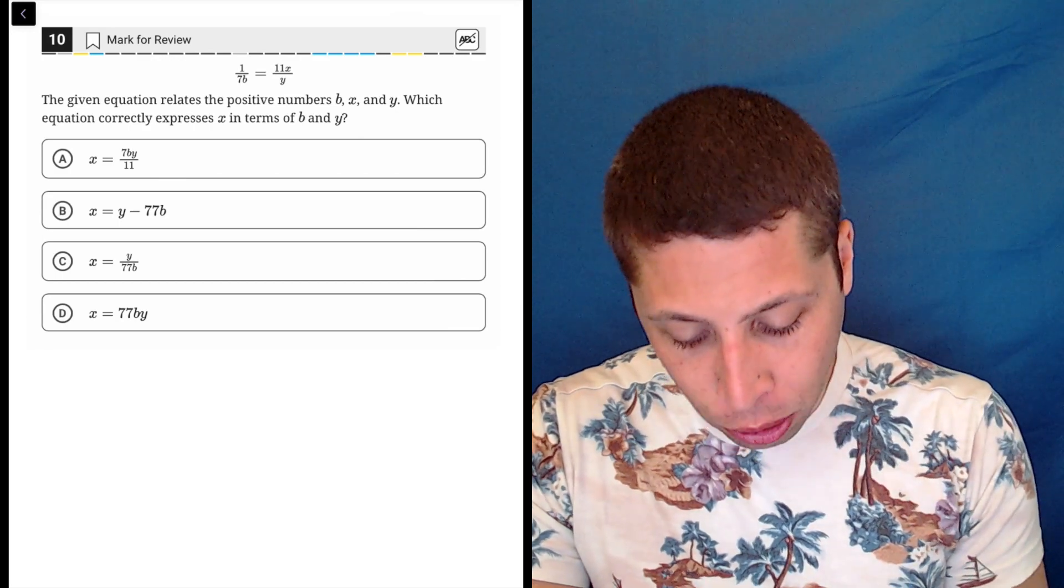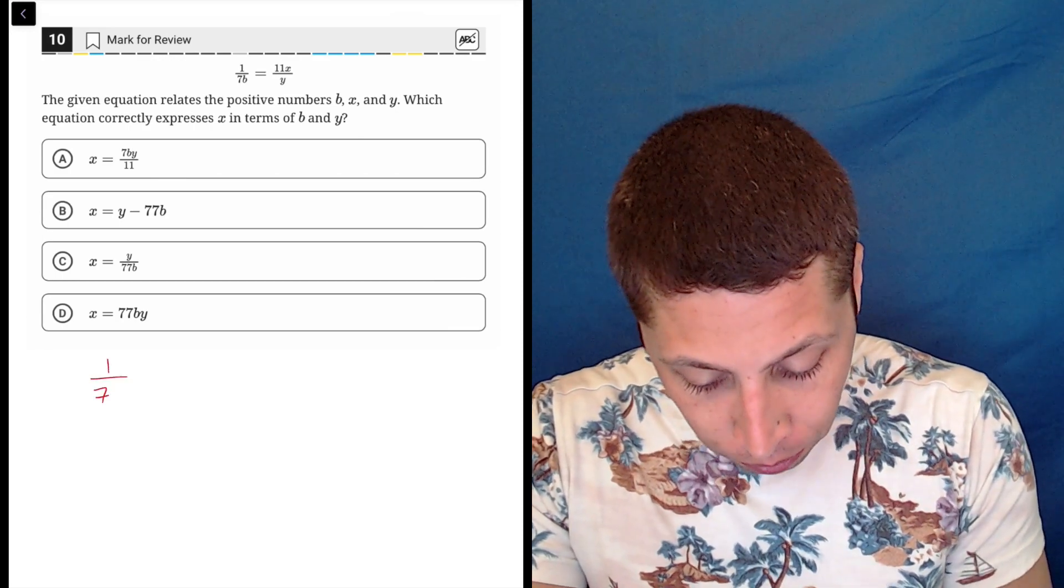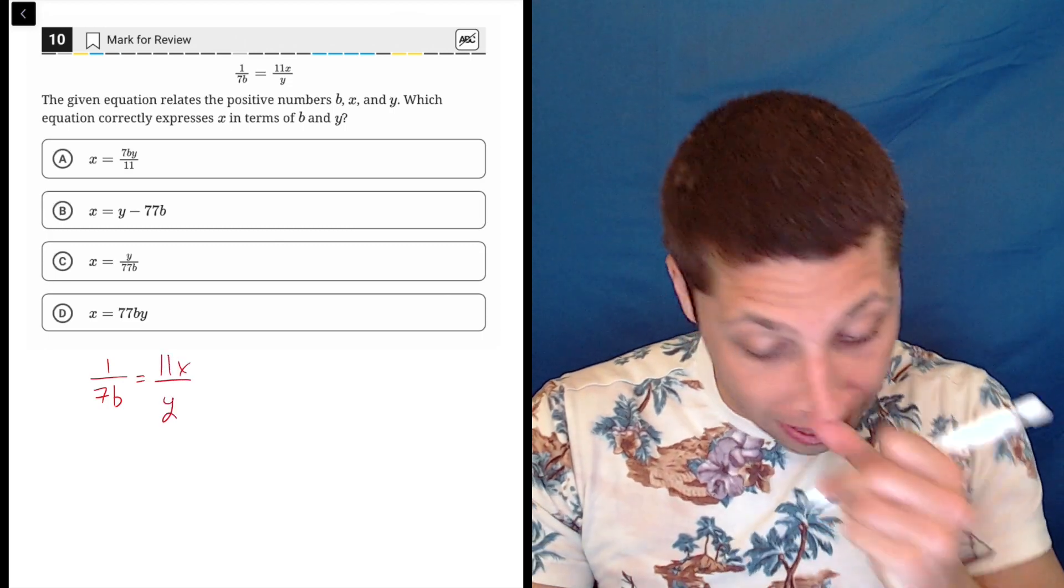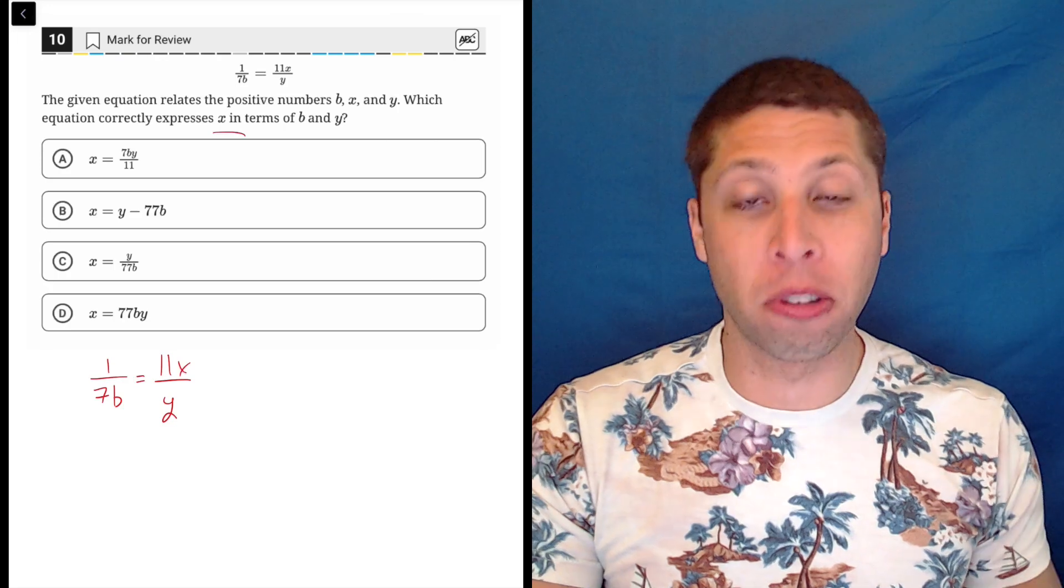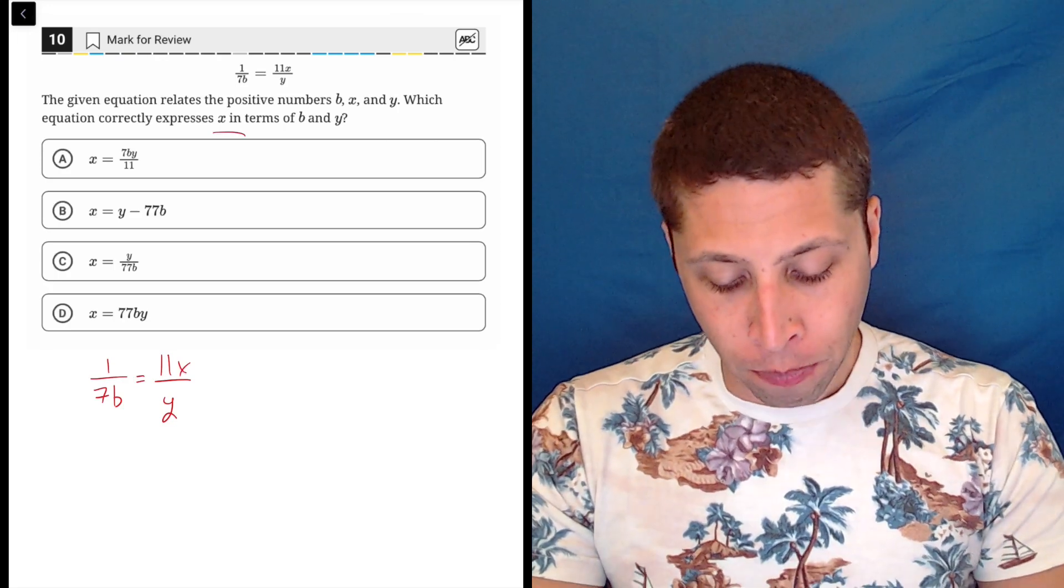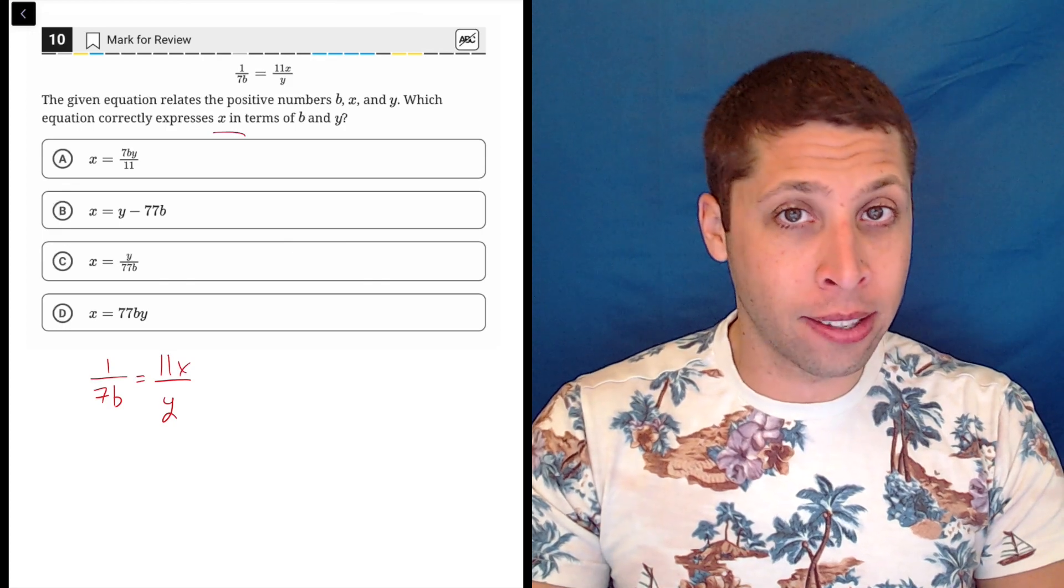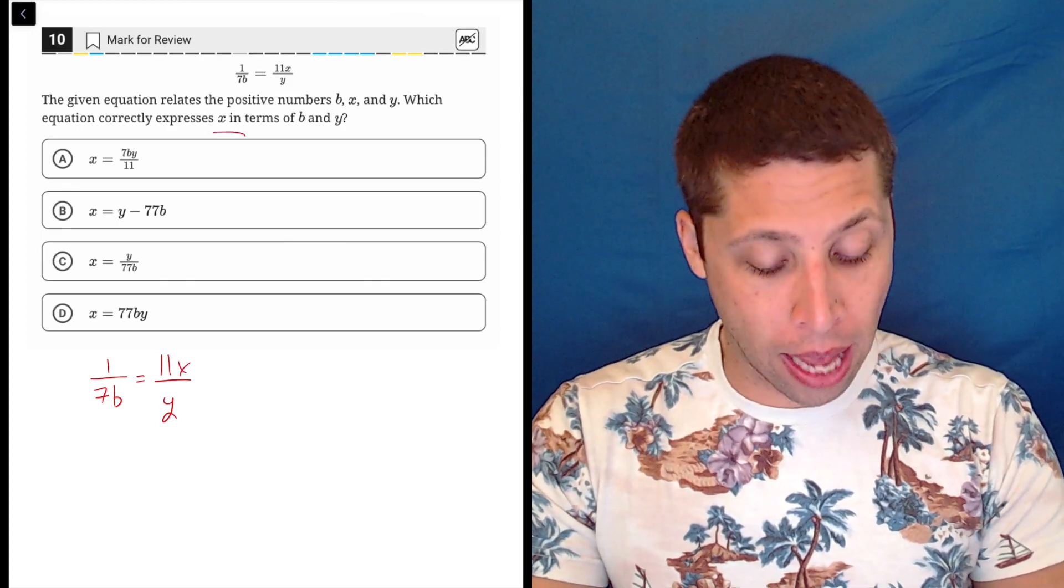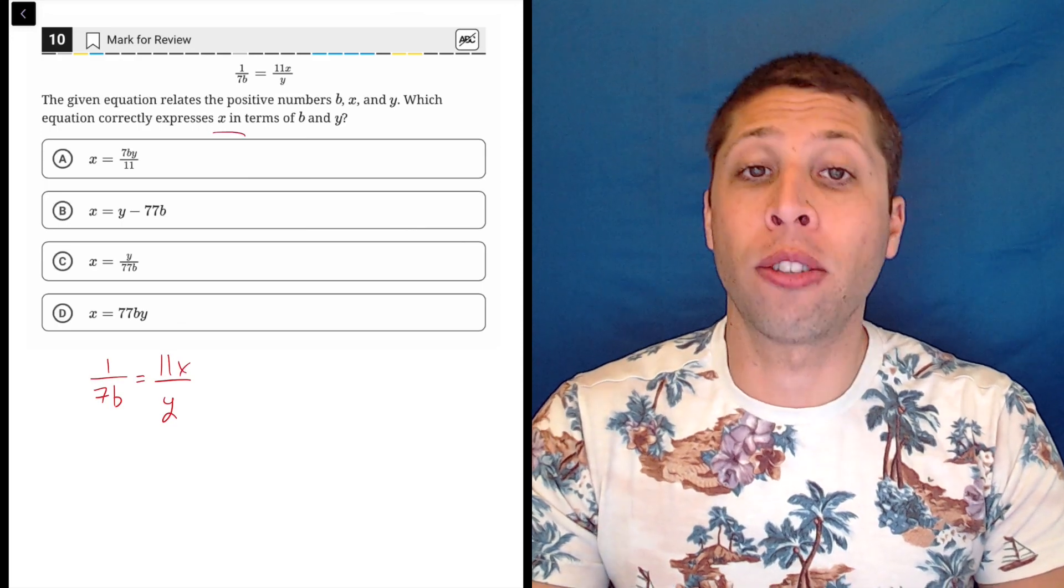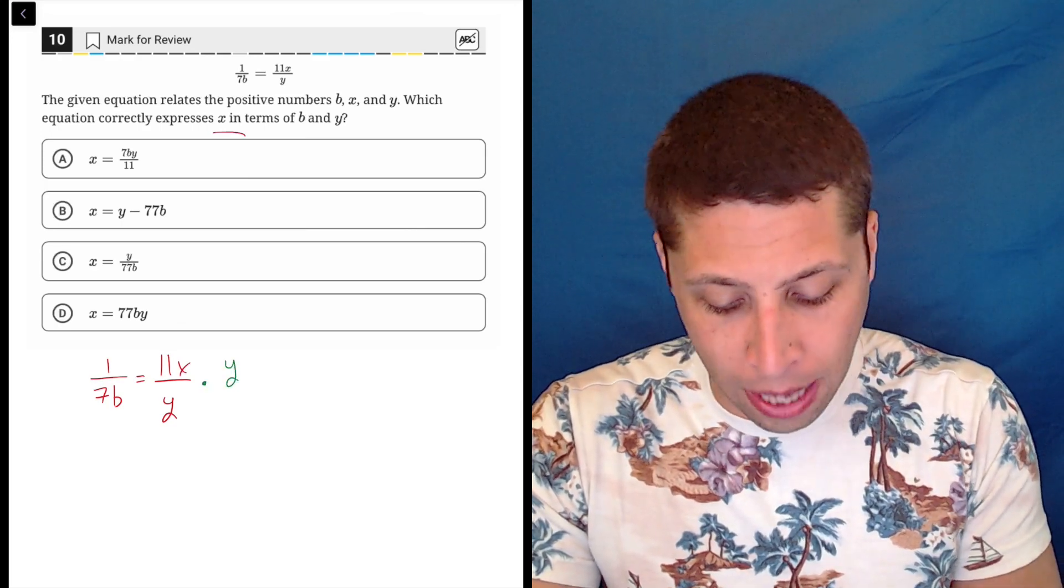So let me show you the way that the test kind of wants you to do it. It's really just about manipulating this equation to get what we want. So if I rewrite it, one over seven B is equal to 11X over Y. And they want us to express X in terms of B and Y. That just means we gotta rearrange. So we wanna get X alone. So the first thing that I see is I don't like the fraction with the X. And I know that fractions are basically division. So the best way to get rid of division is through multiplication.